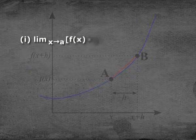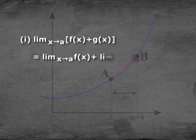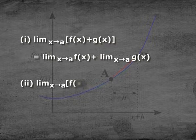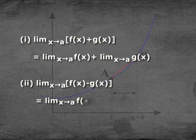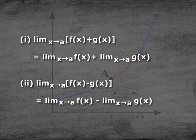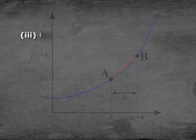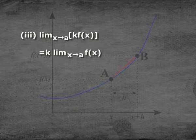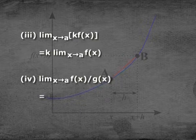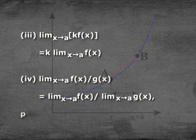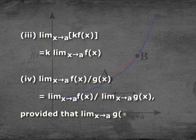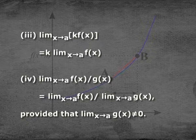The first theorem: limit x→a of [f(x) + g(x)] equals limit x→a of f(x) plus limit x→a of g(x). The second theorem: limit x→a of [f(x) − g(x)] equals limit x→a of f(x) minus limit x→a of g(x). The third theorem: limit x→a of [k·f(x)] equals k times limit x→a of f(x). The fourth theorem: limit x→a of [f(x)/g(x)] equals limit x→a of f(x) divided by limit x→a of g(x), provided that limit x→a of g(x) is not equal to 0.